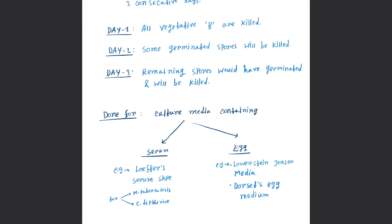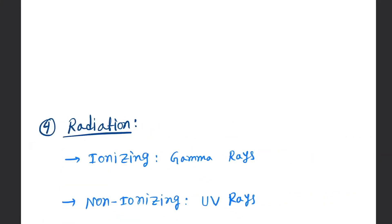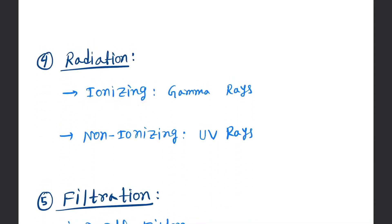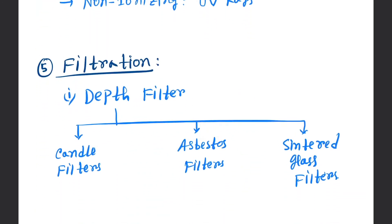Now come to radiation. Radiation is of two types: ionizing, that is by gamma rays, and non-ionizing like UV rays.